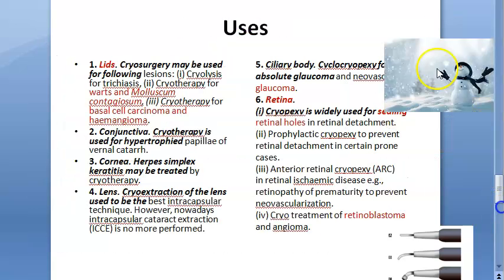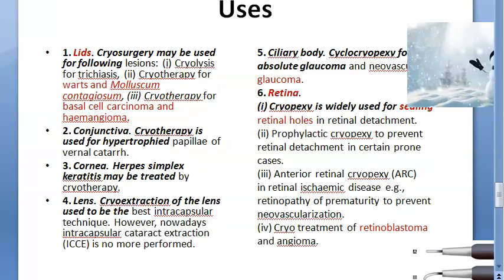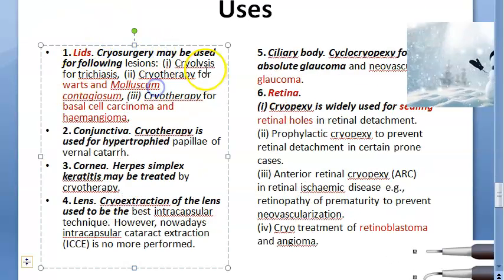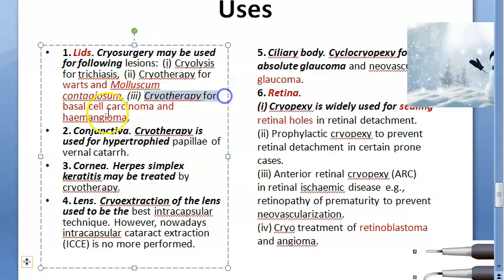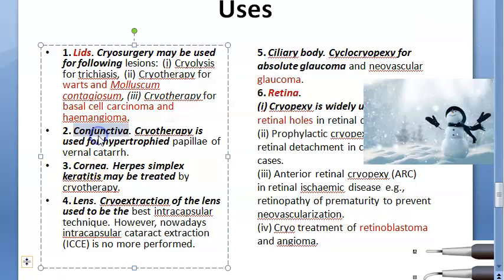For the lids, cryosurgery may be used for cryolysis for trichiasis - eyelashes which are misdirected inward and hurting the cornea. Cryotherapy is also used for warts, molluscum contagiosum, basal cell carcinoma, and hemangioma. For the conjunctiva, it is used for hypertrophied papillae in vernal keratoconjunctivitis.